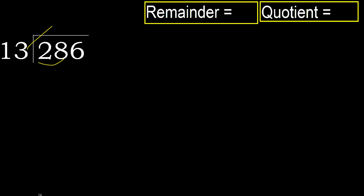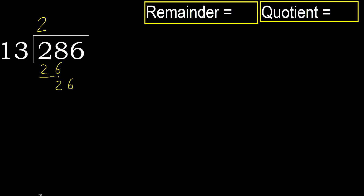13 multiplied by 3 is 39, which is greater. 13 multiplied by 2 is 26, which is not greater. So subtract: 28 minus 26. Next, bring down 6 — 26. 13 multiplied by 2 is 26, which is not greater, so subtract.